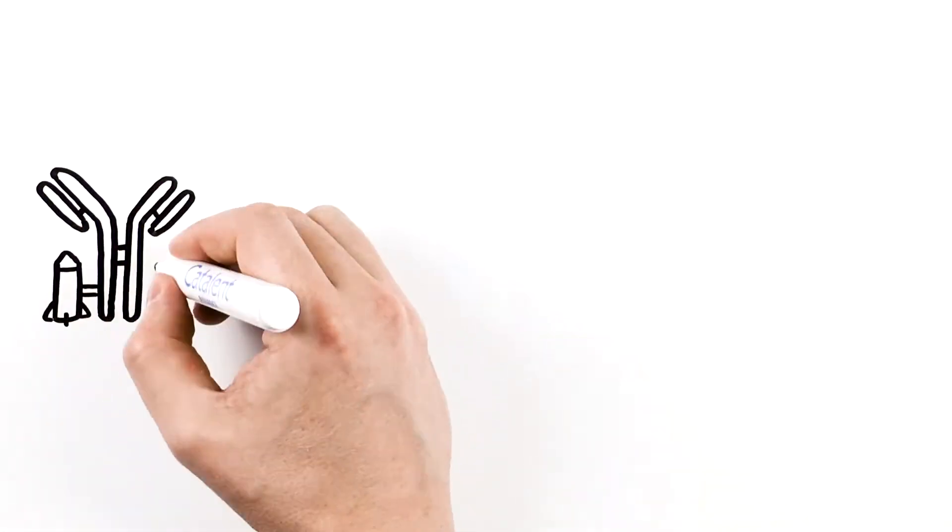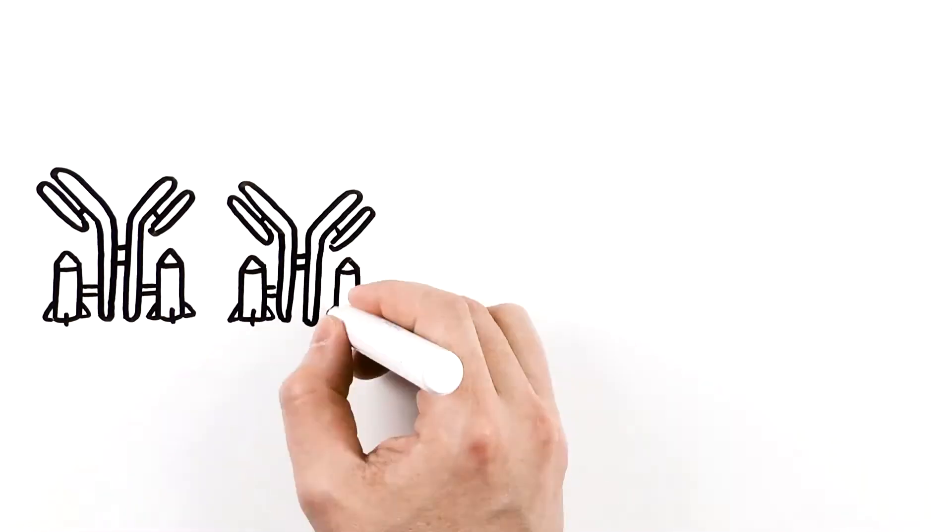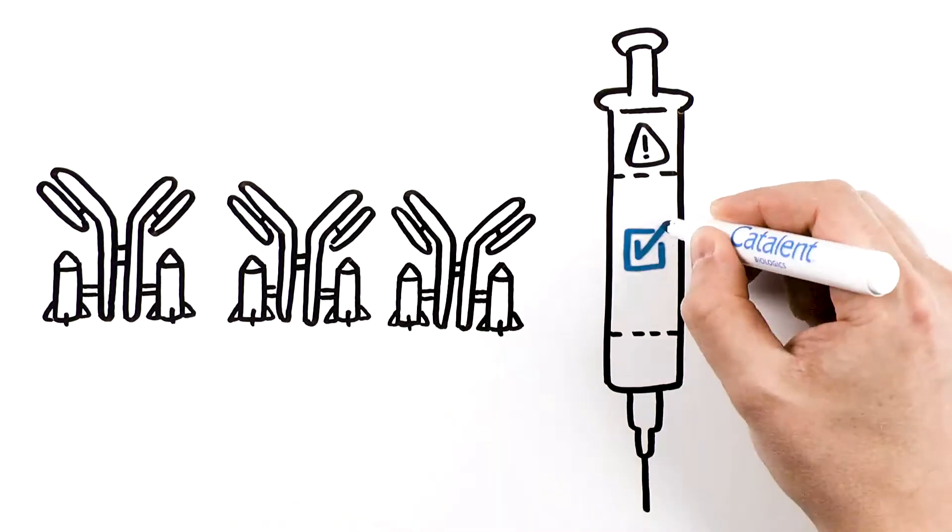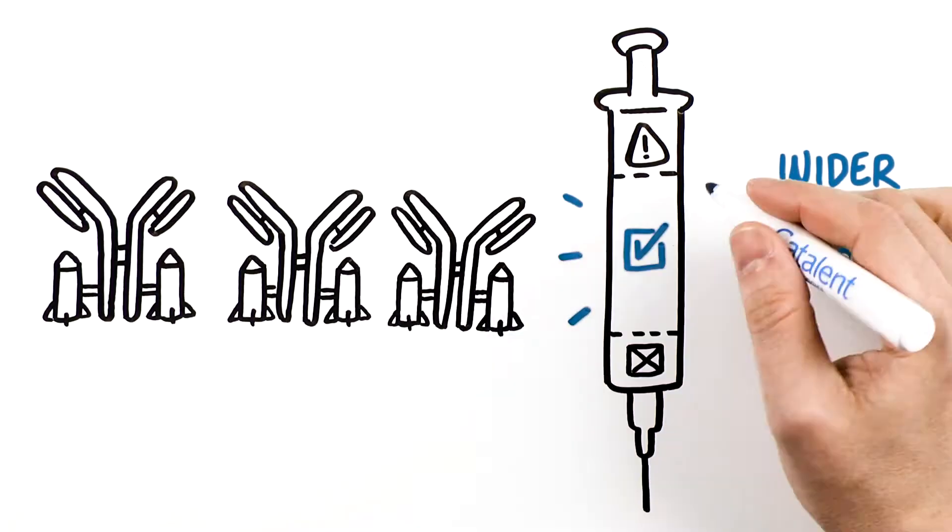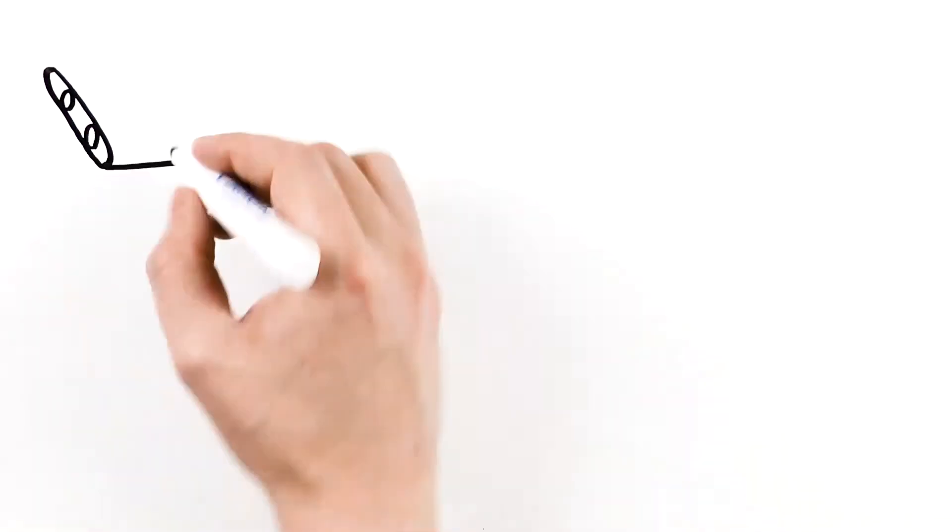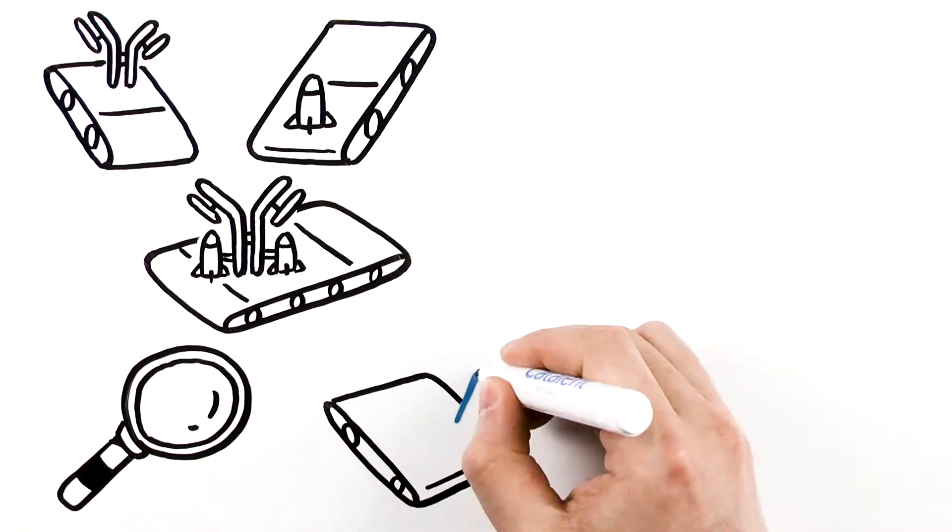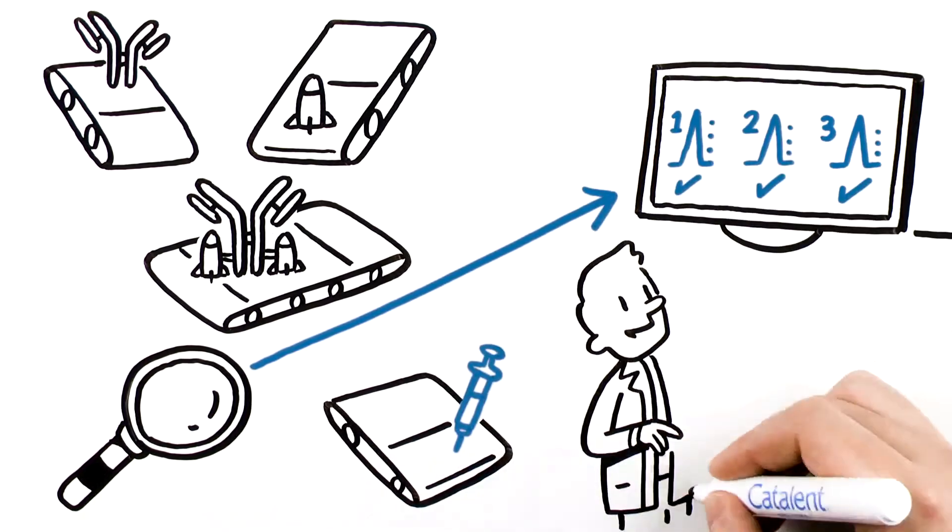Site-specific conjugation is now recognized as a key to producing a homogeneous product that is efficacious and better tolerated, widening the therapeutic window. Site-specific conjugation also offers improved manufacturing with better batch-to-batch reproducibility and simplified analytics.